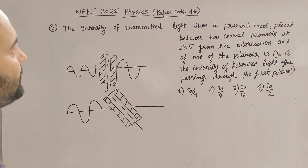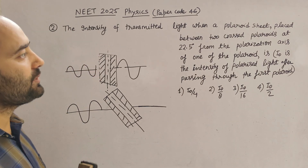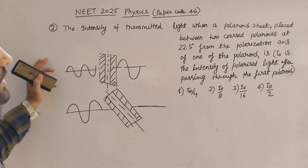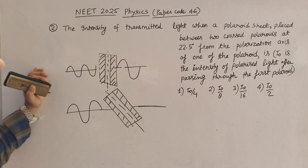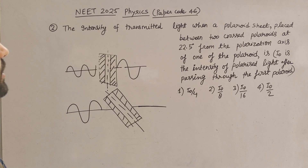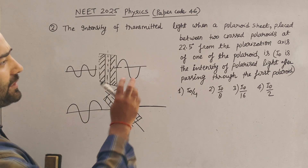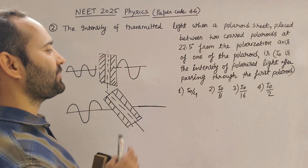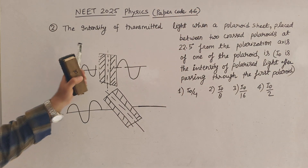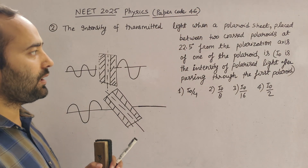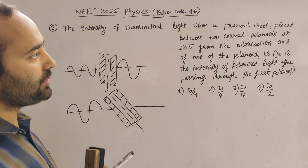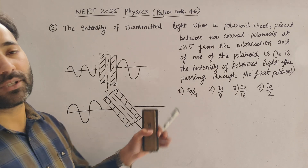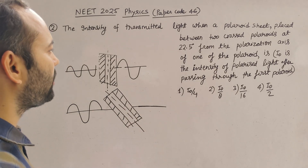Hello students, today in this video series, I will consider a difficult question that was asked in NEET 2025 physics. So this is one of the questions — the paper code is written just for your reference. This question is based on polarization, and for one reason, this question should not have been asked in the NEET exam. I will tell you how.